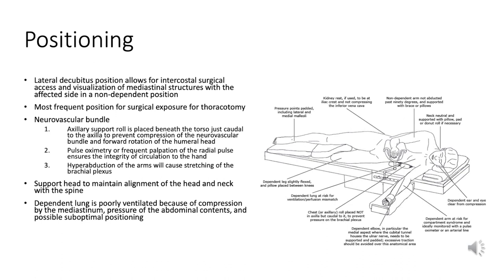Protection of the neurovascular bundle: an axillary roll placed just beneath the torso below the axilla helps prevent compression of the neurovascular bundle — consisting of nerves, arteries, and veins supplying the arm. Compressing it could lead to numbness, pain, or tissue damage. Monitoring circulation to the hand through pulse oximetry or regular palpation of the radial pulse is vital.